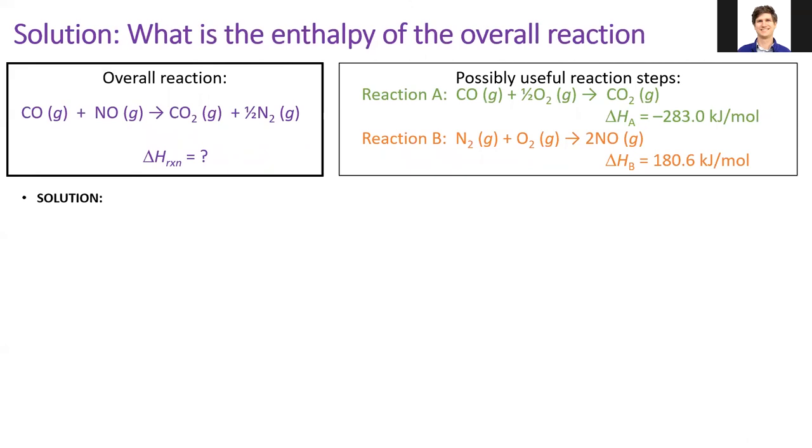Remember, there are often multiple ways to get the correct answer, but this is how I solve it. I first notice that I need an NO on the left side and half an N2 on the right side. Reaction B has both of these species, but it needs to be divided by 2 and flipped before the coefficients match. This manipulation causes the enthalpy of reaction B to be multiplied by negative one half.